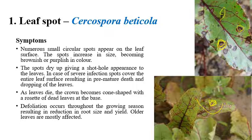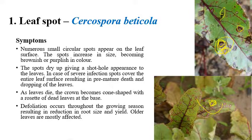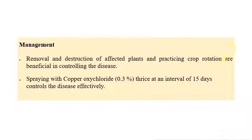Defoliation occurs in young leaves as well, and spots can be seen mostly on older leaves. The major symptom is small brownish to purplish color spots or discolorations on leaves. For management, removal and destruction of infected plants and practicing crop rotation are necessary. Fungicide application with copper oxychloride 0.3% at 15-day intervals can control this disease very effectively.